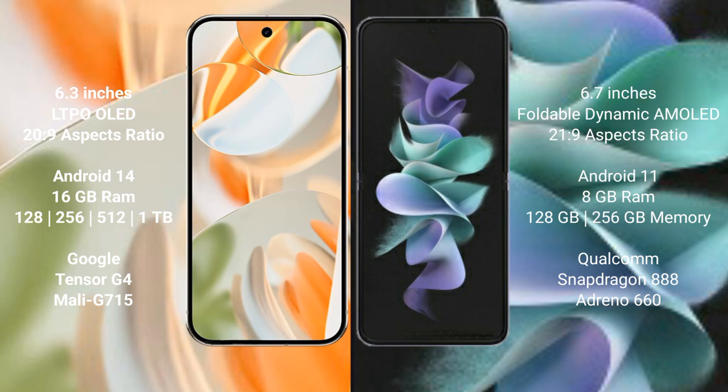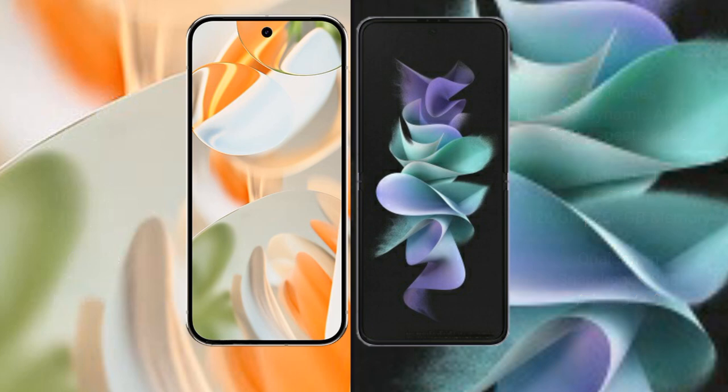The Google Pixel 9 Pro comes with 16GB RAM and 128GB, 256GB, 512GB, or 1TB internal storage, powered by the Google Tensor G4 processor with a Mali G715 GPU. The Samsung Galaxy Z Flip 3 comes with 8GB RAM and 128GB or 256GB internal storage, powered by the Qualcomm Snapdragon 888 processor with an Adreno 660 GPU.